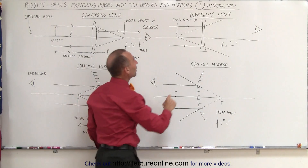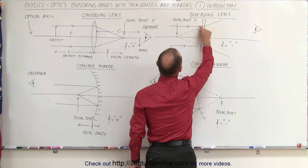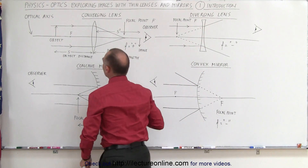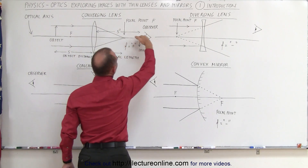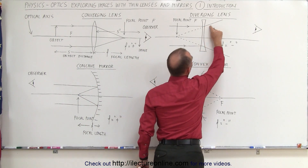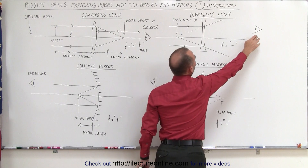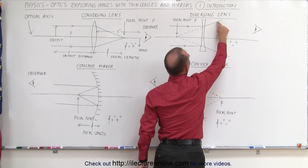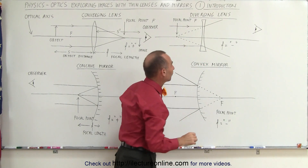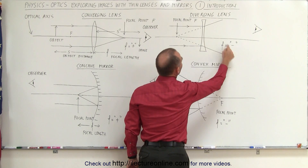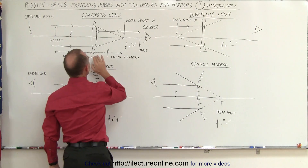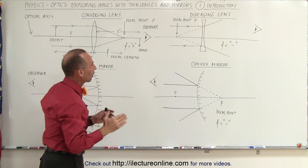On the other hand, when we have diverging lenses, the rays come to the lens parallel and diverge away from the lens — away from the optical axis. The line drawn through the middle of the lens or mirror is called the optical axis. An observer on the right side of the lens sees these rays and says they appear to be coming from a single point — that's a virtual focal point, and therefore a negative focal length. So the distance from the lens to the focal point is a negative distance for diverging lenses and a positive distance for converging lenses.